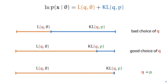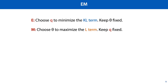One way of thinking about this is that L is a lower bound of the log-likelihood that we're actually interested in, and the KL-term tells us how good of a lower bound this is. We can now redefine our EM algorithm. In the expectation step, we choose q and we choose it to minimize the KL-term, keeping the parameters of our model fixed. And in the maximization step, we choose theta to maximize the L-term, keeping q fixed.